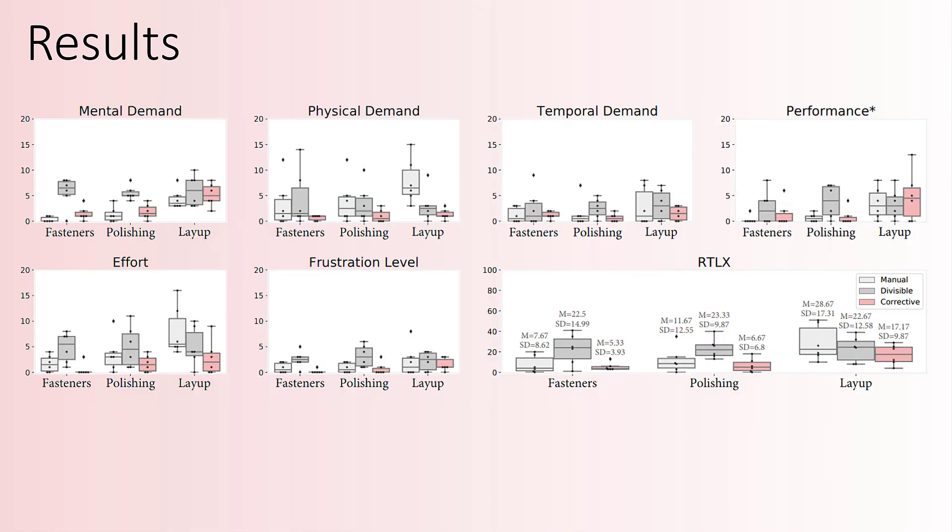We also show that users tended to report lower physical demand and effort using corrective shared autonomy compared to the two other methods.